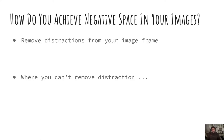So how do you achieve negative space in your images? You need to remove all the distractions from your image frame — empty the background, no big contrasting colors, simple shapes are okay, avoid complex shapes, avoid bright things. Where you can't remove the distractions, use shallow depth of field, mute the colors and tones in the background in post-processing, or consider using monochrome.